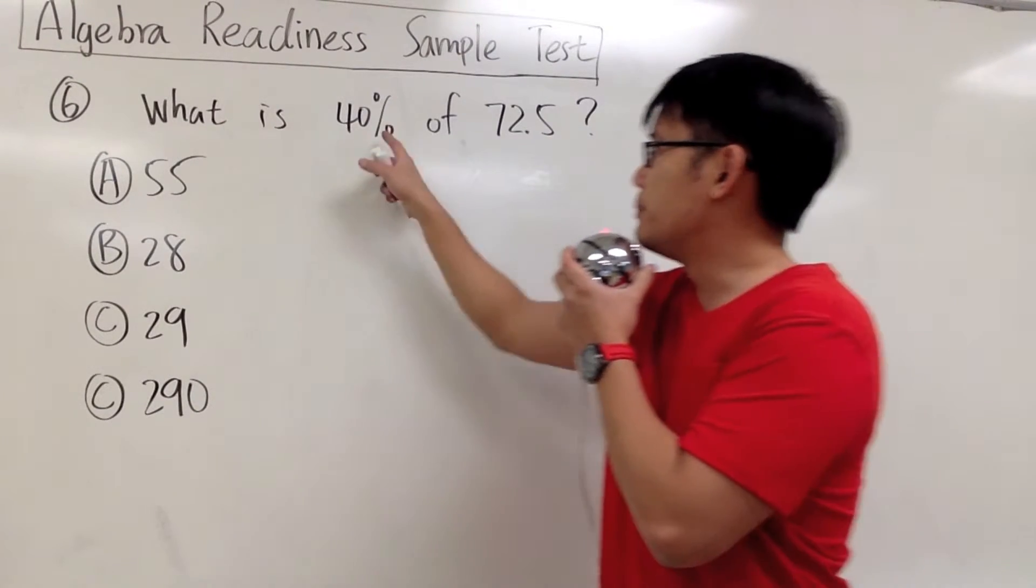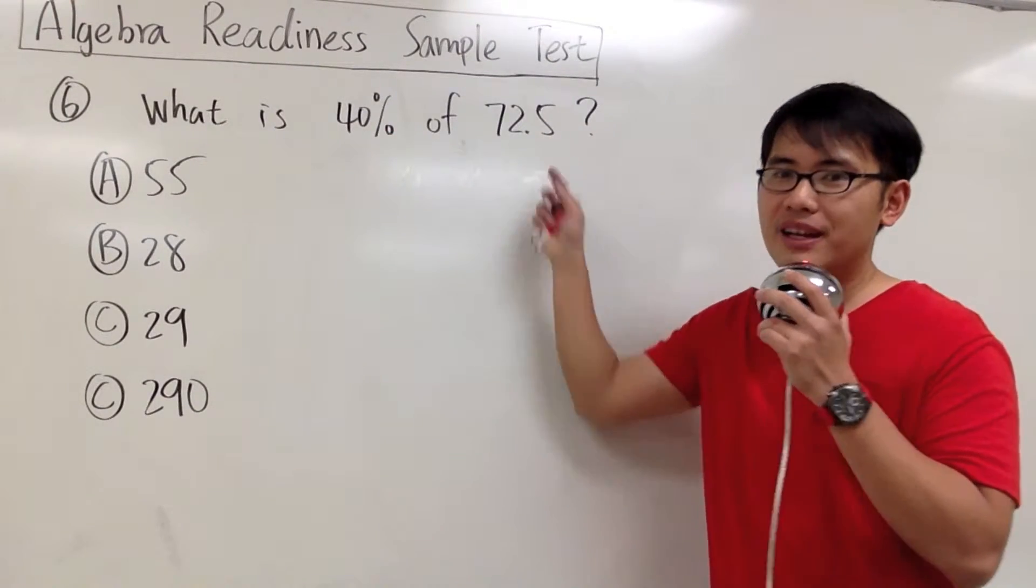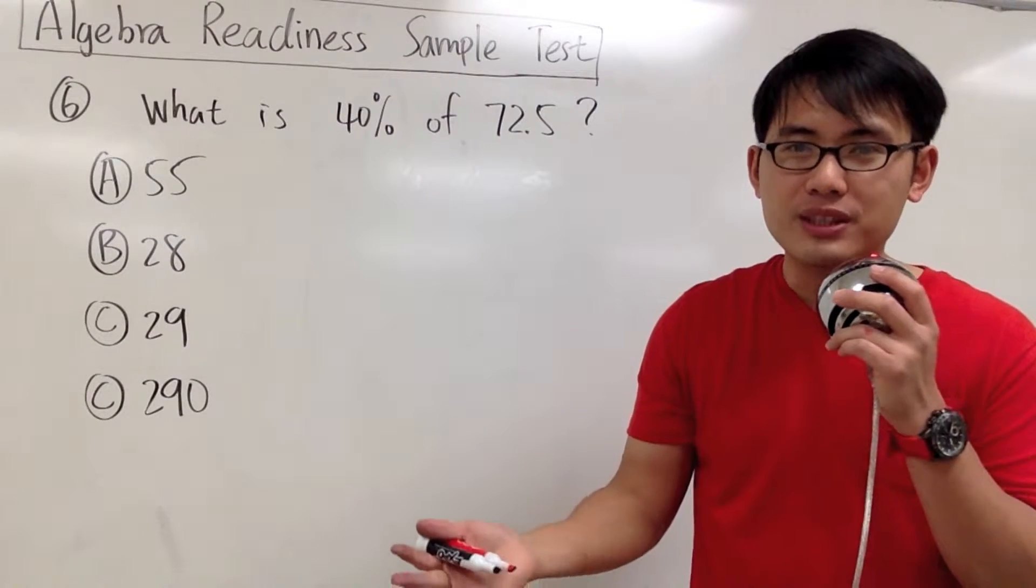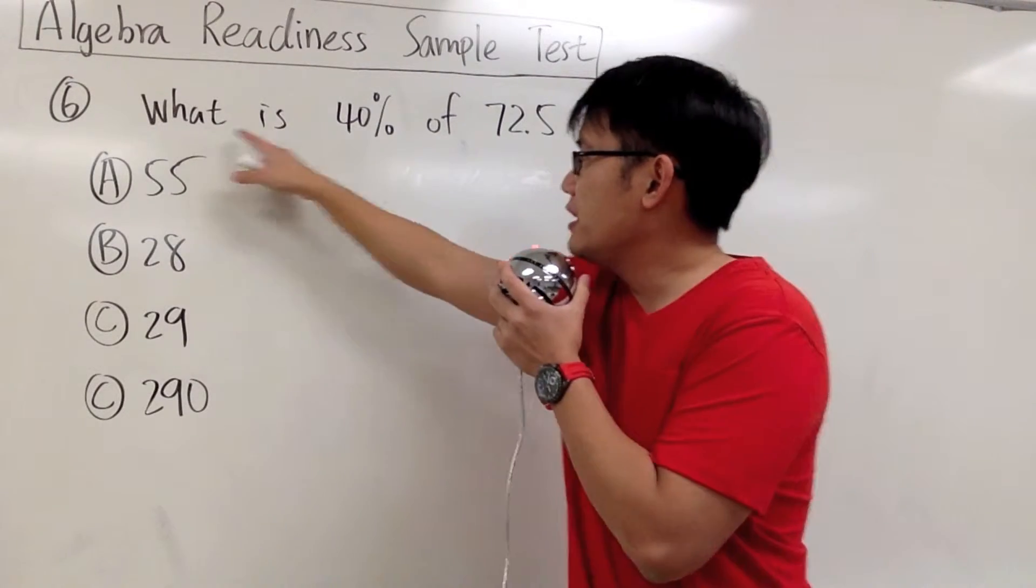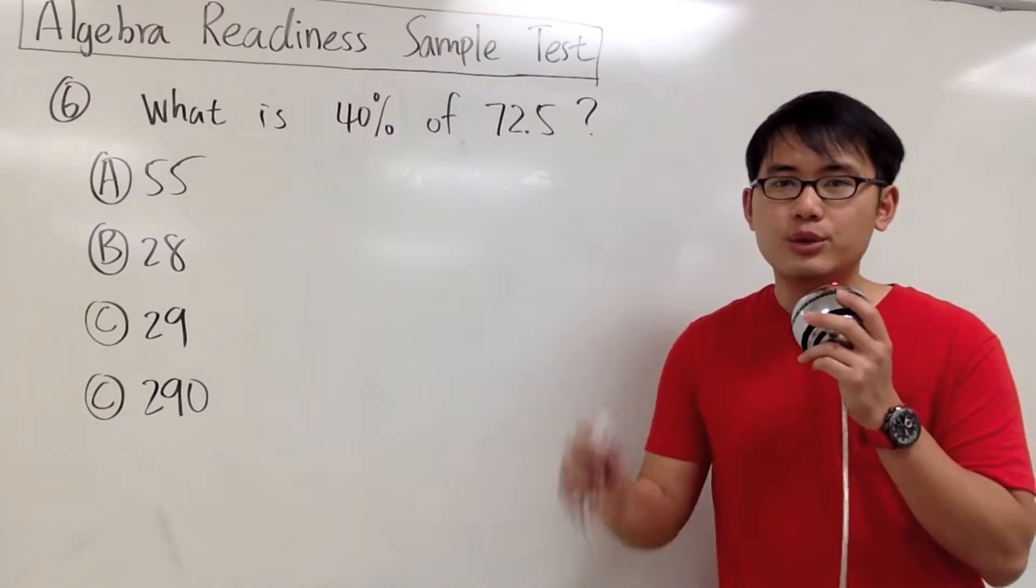Number 6, what is 40% of 72.5? Let me show you a more algebraic way to do this, and that is,